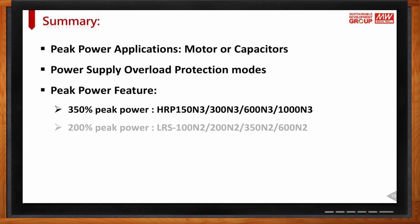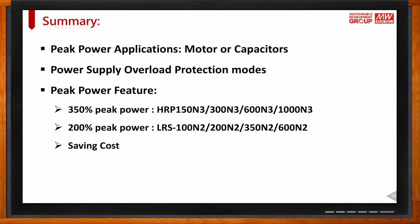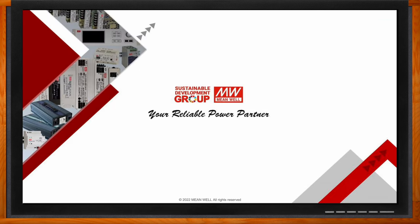The HRP — with 350% capability — is offered in 150W, 300W, 600W, and 1000W, all with power factor correction. The LRS — with 200% capability — is offered in 100W, 200W, 350W, and 600W, with 12V, 24V, 36V, and 48V output voltages, and can double the output power for the first five seconds. Both series save cost compared to purchasing a higher-rated power supply — the LRS for economical applications, the HRP for industrial applications.